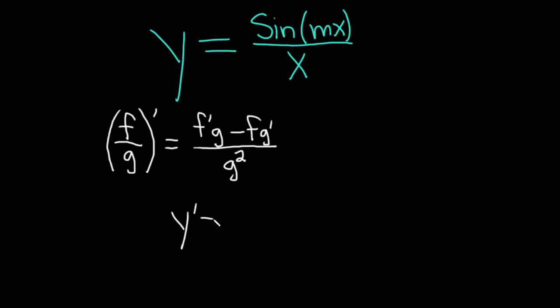So y prime equals the derivative of the top. So the derivative of sine is cosine, but here it's the sine of mx. So we're going to have to use the chain rule. So the outside function is sine and its derivative is cosine mx times, and then the chain rule says we multiply by the derivative of the inside. Well, m is a constant, so when you take the derivative of x, you just get 1. So you get m times 1, which is m.